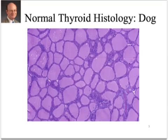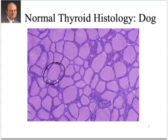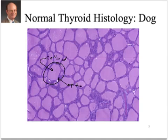This is the histological section of a dog thyroid gland. You can orient yourself by noting that these round or elliptical structures are cross-sections across spheres that exist together within the gland. The pink-purple material here we call the colloid, and the colloid is surrounded by a columnar epithelial cell. We'll blow this up in the next couple of slides to help you understand how the thyroid gland makes thyroid hormone.